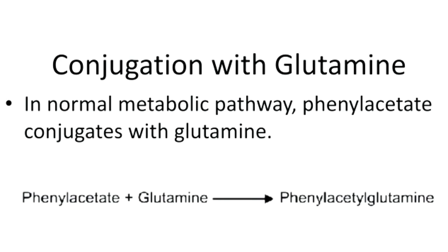Conjugation with glutamine: during normal metabolic pathways, for example metabolism of phenylalanine, some phenylacetate is formed. Phenylacetate is toxic, and if its concentration increases it may affect blood pH. This toxic compound is converted into a less toxic compound, phenylacetylglutamine, by glutamine, which is an amide form of glutamic acid.